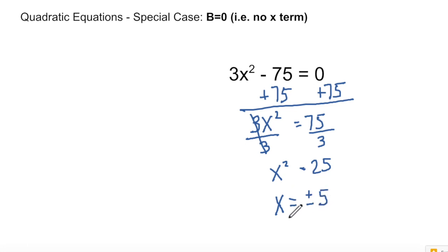So x can equal positive or negative 5. So there are two solutions for x. So we could write our solution set like this, negative 5 comma 5, as our set of solutions for this equation.